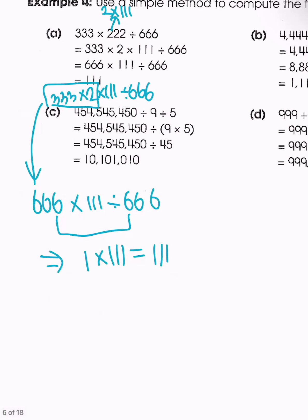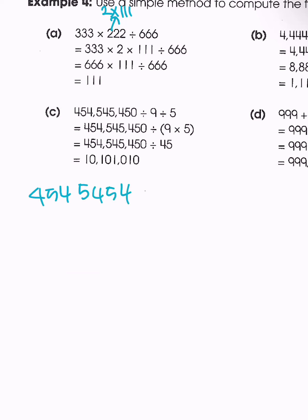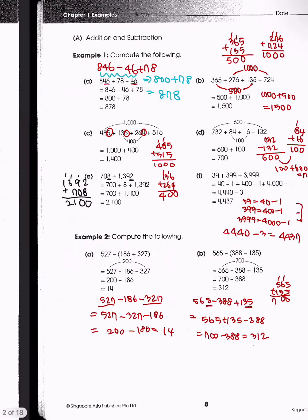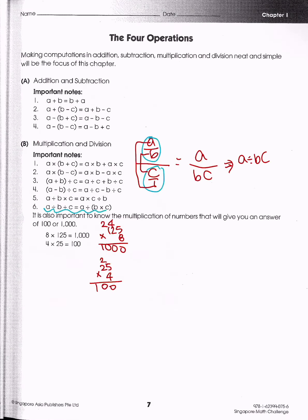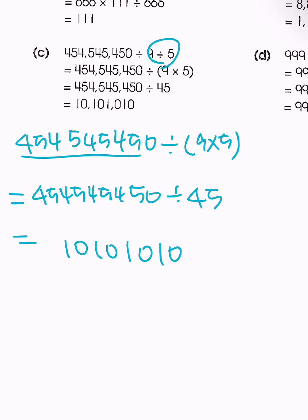For problem C, we have a really large number, but since we have two divisions, that equals the large number divided by those two divisors multiplied together. We know that 9 times 5 is 45, so we're dividing by 45, which gives us the answer quite easily.